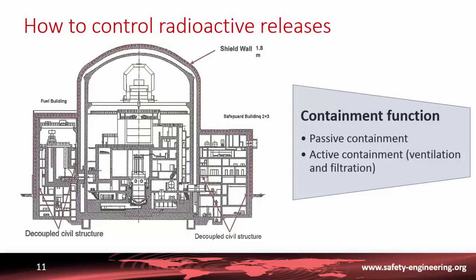And so the last safety function is a containment function so that we can avoid the radioactive release even if there is an accident inside the reactor and some contamination or even fission products is released in the containment. The containment could be either passive through a big building which is leaktight.